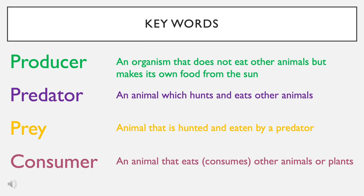Before we look closer at food chains and webs, I want to talk about key terminology — some key words we'll need to use to describe food chains and webs. Firstly, let's look at the word producer. A producer is an organism that does not eat other animals, but instead makes its own food from the sun. It's involved in a very important process called photosynthesis.